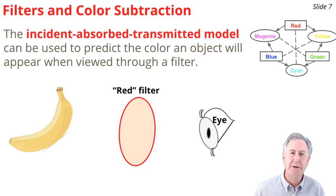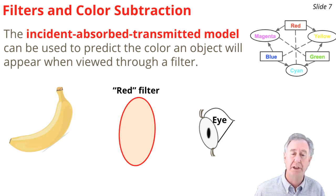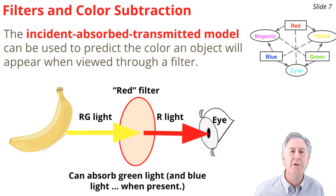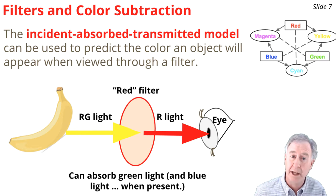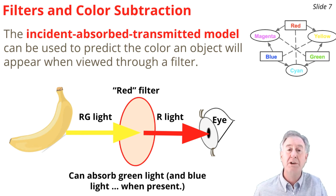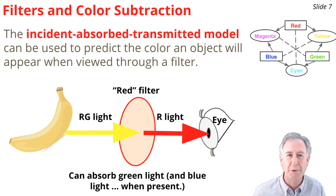The incident-absorbed-transmitted model can be used to predict the color appearance of an object when viewed through a filter. For example, suppose you have a yellow banana and you're looking through a red filter at it. A yellow banana, under white light, absorbs blue and reflects red and green — so it acts as a red-green light reflector. That red-green light approaches the red filter. The filter transmits red and absorbs green, so only red reaches your eye, and the banana looks red through the red filter.